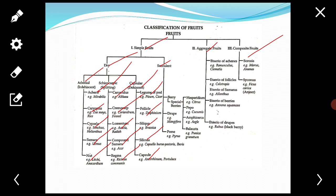Second type, that is follicle. These fruits developed from a simple pistil splitting along one suture. Example: Delphinium.